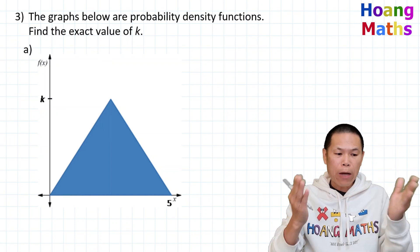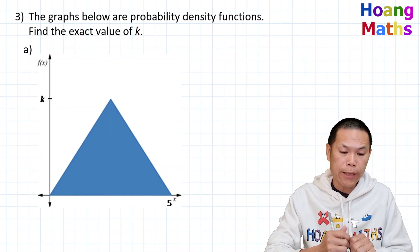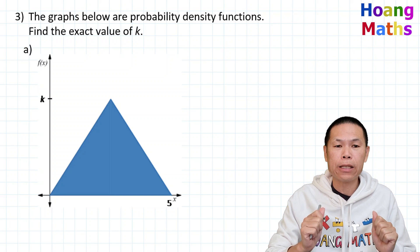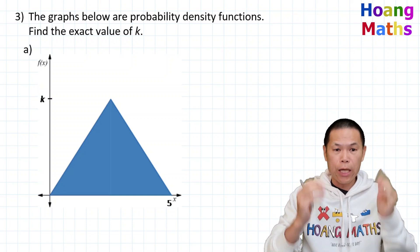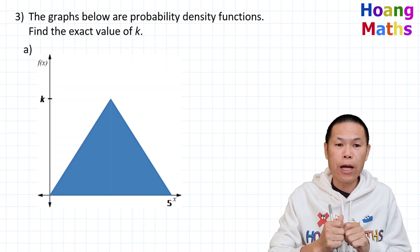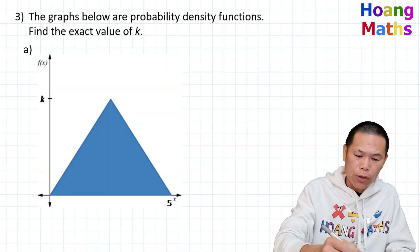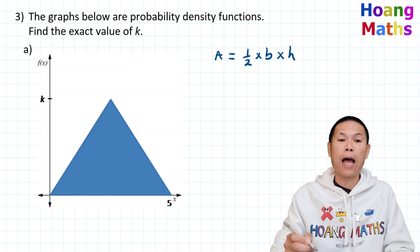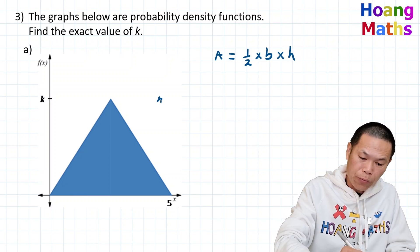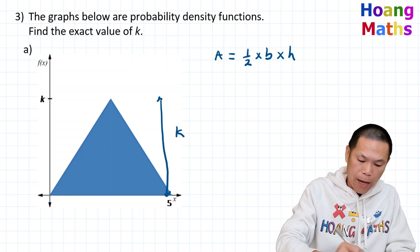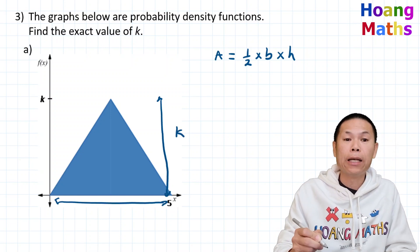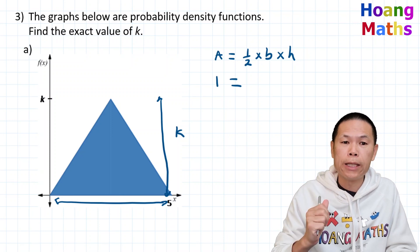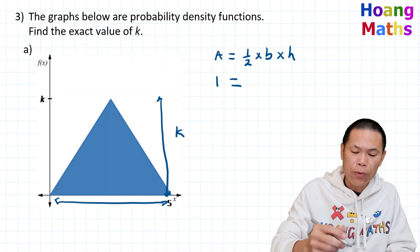Second question. The graphs below are probability density functions — find the exact value of k. We know that for a probability density function, the area under the curve must equal one. The area of this triangle has height k and base five units, and that area must equal one.